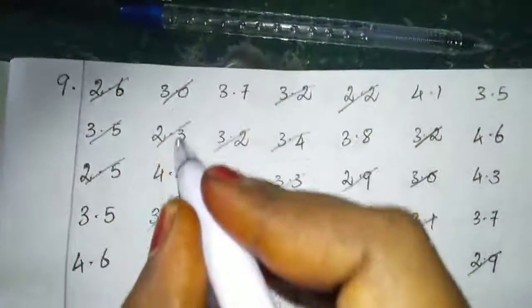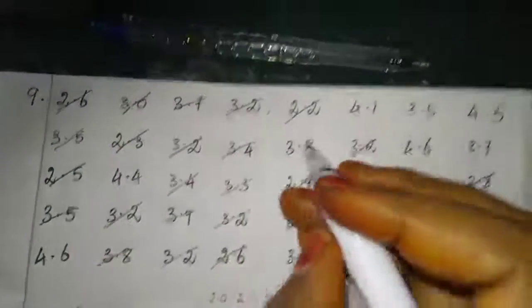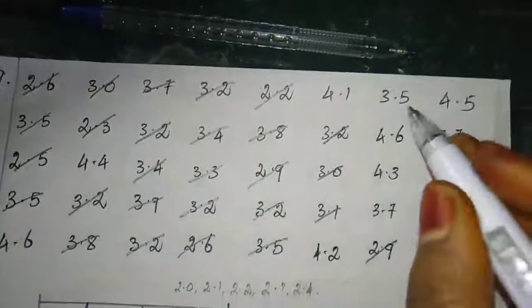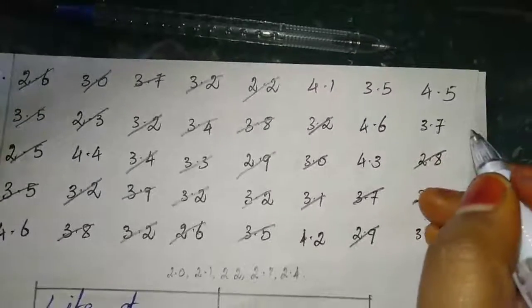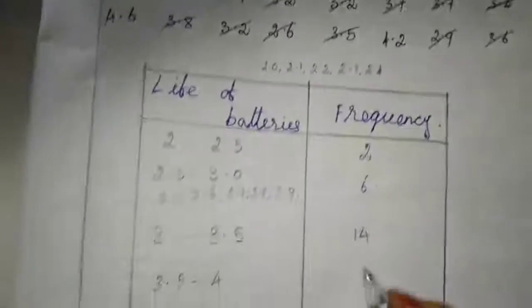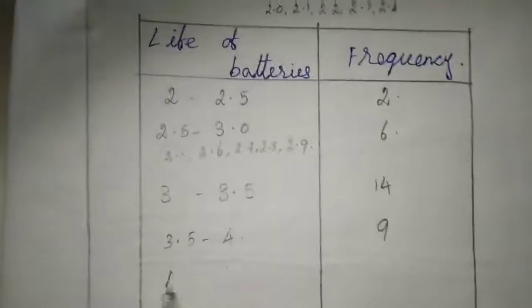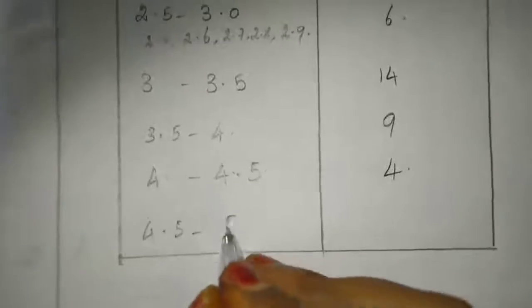Next one is 3.5 to 4. Counting, we have 9. Next one is 4 to 4.5. Counting, we have 4.